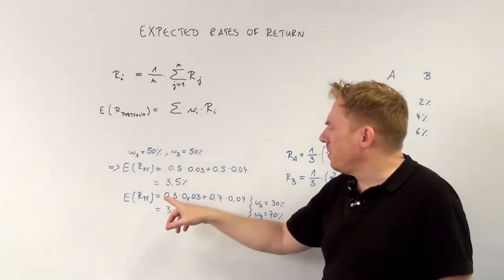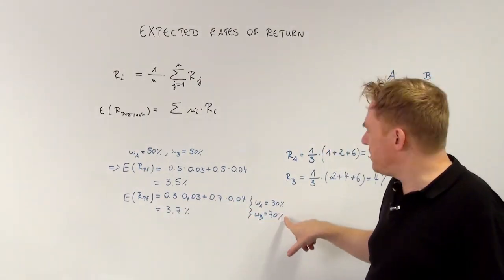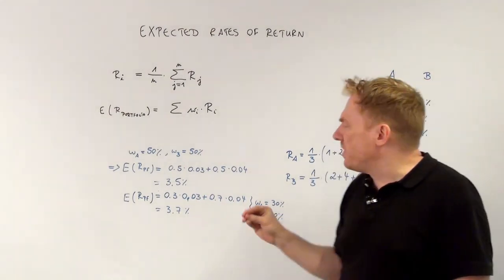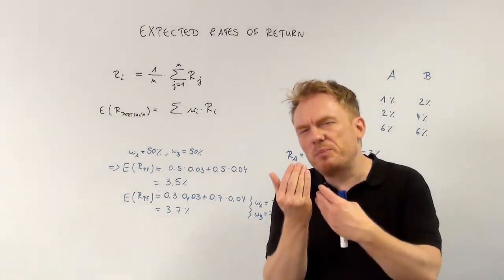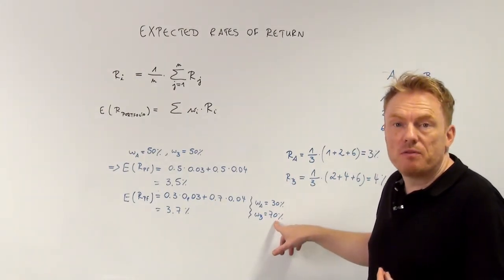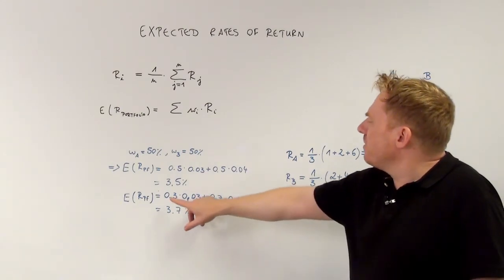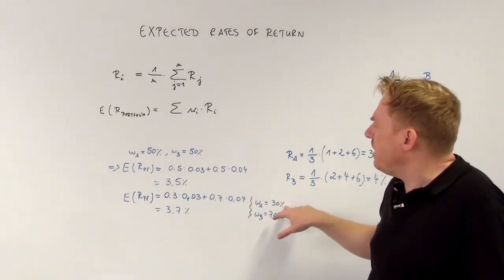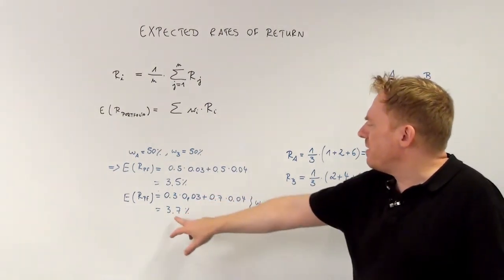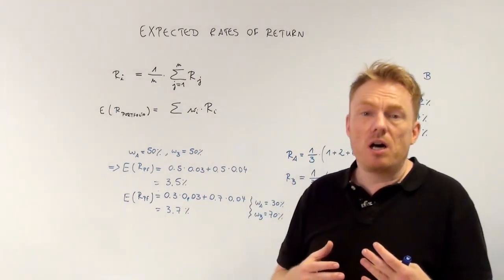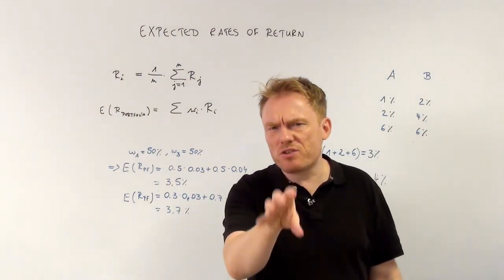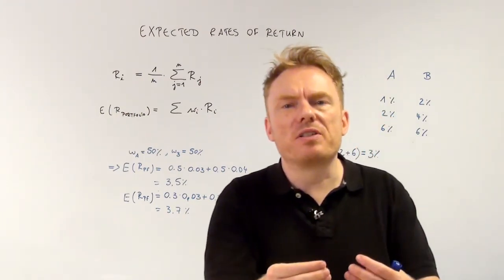If the weights are different — for example, 30% of share A and 70% share B — the result is different. The result is closer to the expected return of share B because its weight is closer to 100%. So 0.3 multiplied by the expected return of share A plus 0.7 multiplied by share B gives us an expected return of the portfolio of 3.7%. That's the first key concept to understand concerning Markowitz portfolio theory.